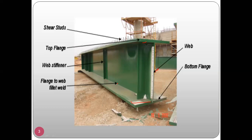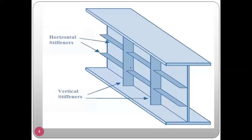The flange is connected to the web with the help of a fillet weld. That is the nomenclature of plate girders. In addition to vertical web stiffeners, horizontal stiffeners are also provided along the length of the web. These horizontal stiffeners control buckling, as the web is very slender and subjected to heavy shear force — it may bend or buckle. So vertical and horizontal stiffeners are both provided.